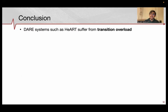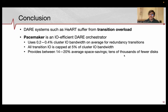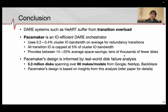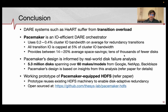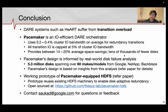In conclusion, disk adaptive redundancy systems such as HART suffer from transition overload. Pacemaker is an IO-efficient disk adaptive redundancy orchestrator that uses very little capped IO bandwidth and provides significant space savings worth millions of dollars. Pacemaker is designed based on real-world failure analysis of millions of disks from actual deployments, and we also built a prototype in HDFS. The paper and GitHub repo are available for further reading.